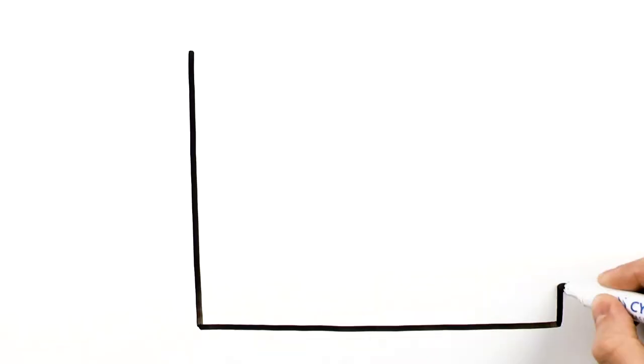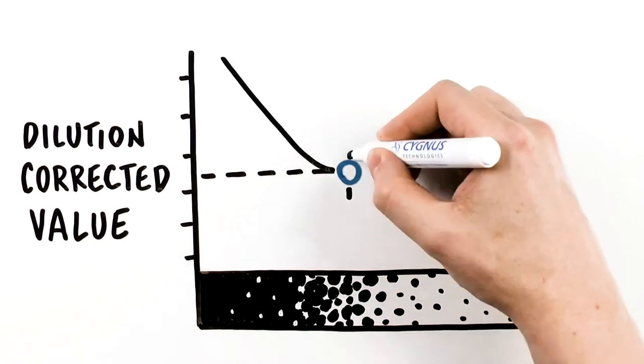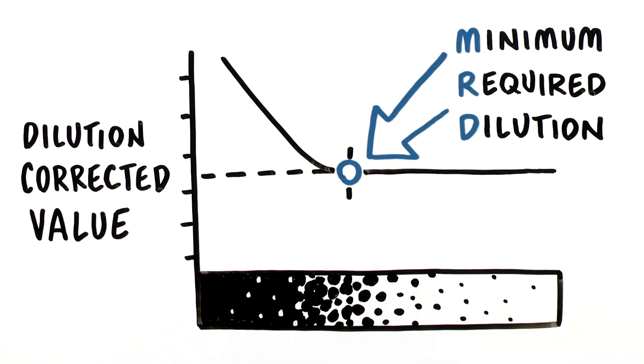In most cases, a dilution will be reached in the process where the dilution-corrected value remains essentially constant. This constant is called the minimum required dilution, or MRD.